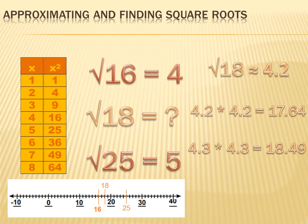We could also go and try 4.3. And if we multiplied 4.3 times 4.3, we'd get an answer that was a little bit bigger than 18. Now, 18 is about halfway in between these two numbers. So I would think that the actual square root would be halfway in between 4.2 and 4.3. And I would estimate that the square root of 18 is approximately 4.25.